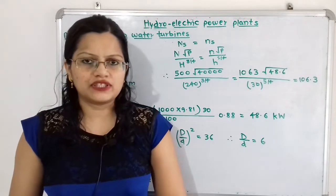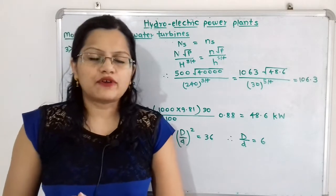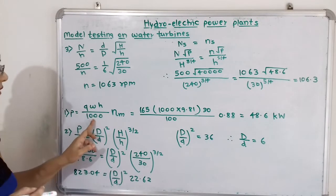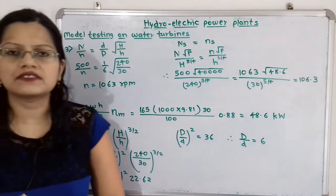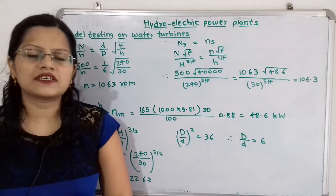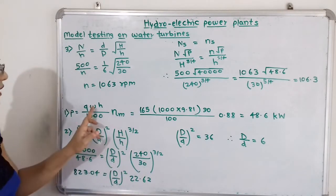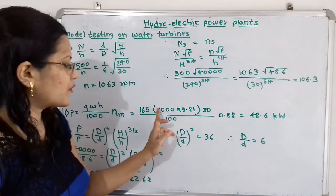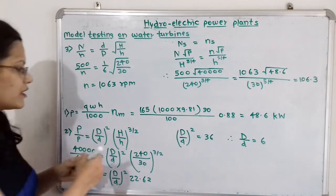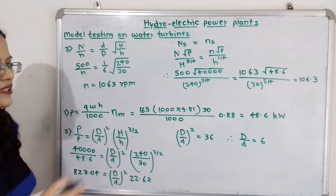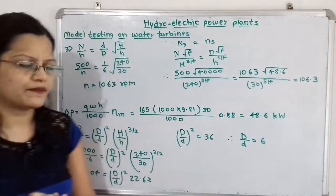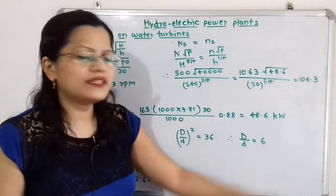Now we will move to calculations. First, we calculate the power developed by the model. Small p equals small q times W times h divided by 1000, multiplied by efficiency eta_m. Here q is 165 kilograms per second, W is density of water which is 1000 times 9.81, h is 30 meters, divided by 1000, multiplied by efficiency 0.88. When we calculate this, we get 48.6 kilowatt.